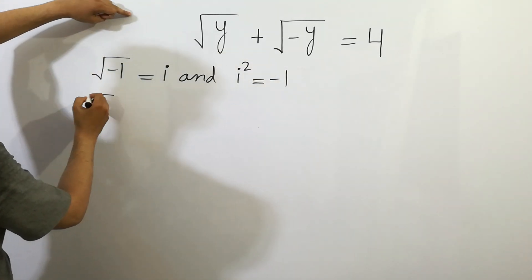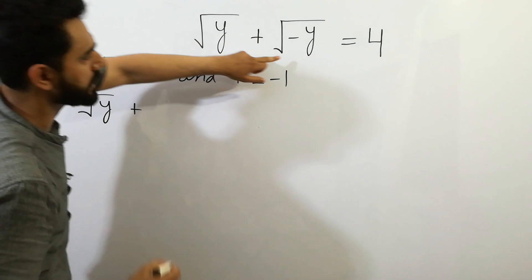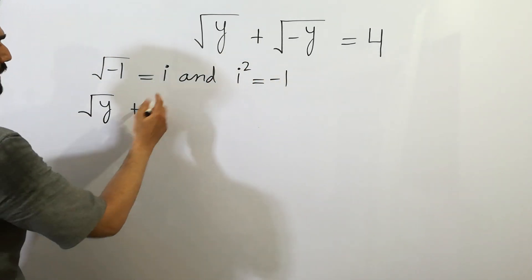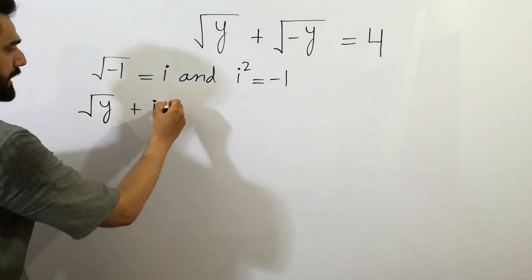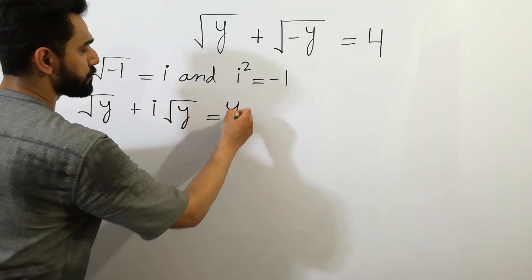Square root of y plus square root of minus 1, we can write i and square root of y is equal to 4.